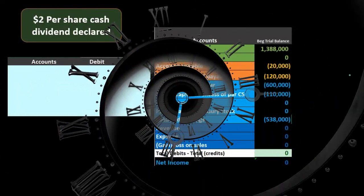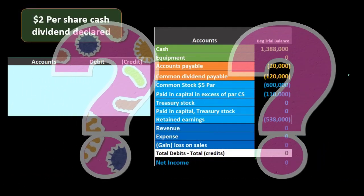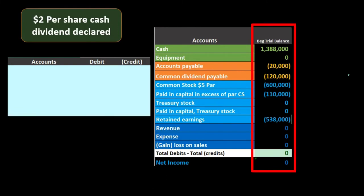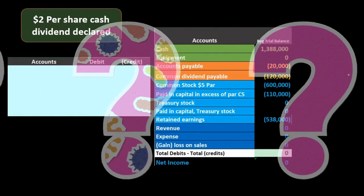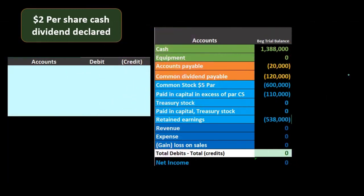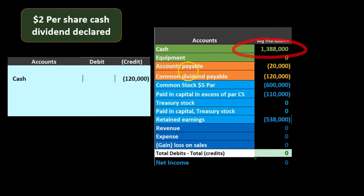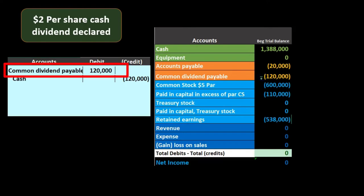When that later time happens we're going to pay it off. Note there's a period in between where we determine who's going to get paid — what date are people actually holding the stock, since stocks are trading all the time. There's no transaction related to that date; we just need to know who we're going to pay. Then we record the payment transaction: cash has a debit balance and we're going to make it go down — we pay the $240,000 we owe to the stockholders. The other side is the common dividends payable, which has a credit balance of $240,000 and we need to make it go down with a debit.